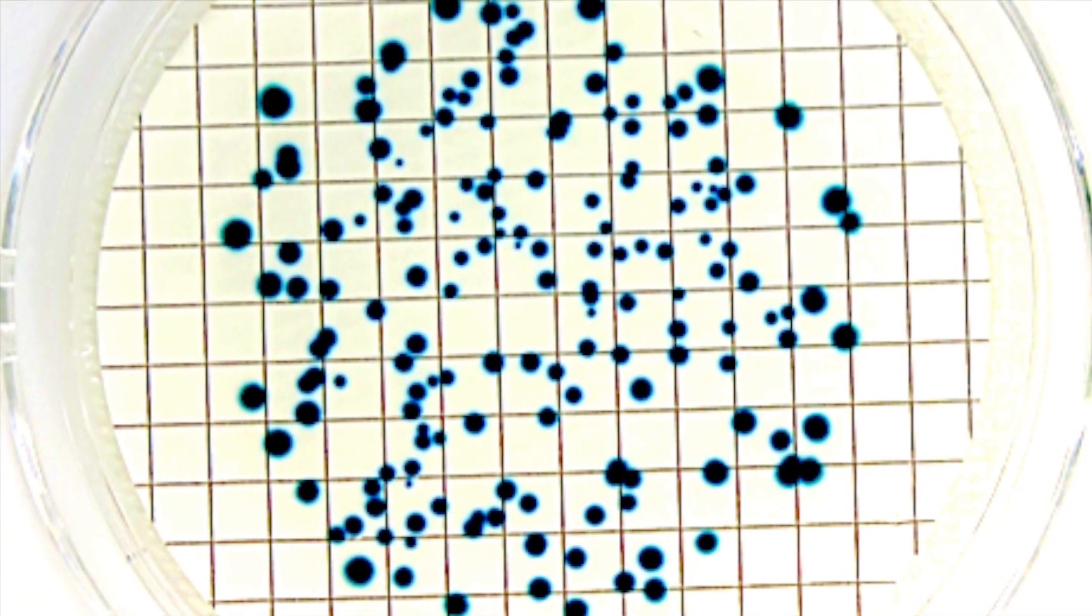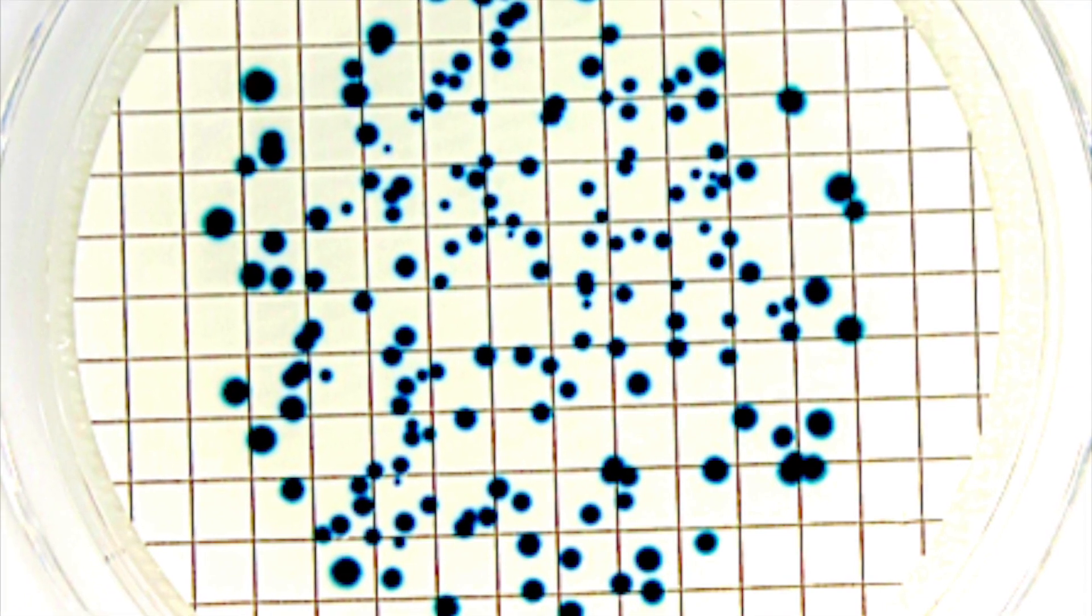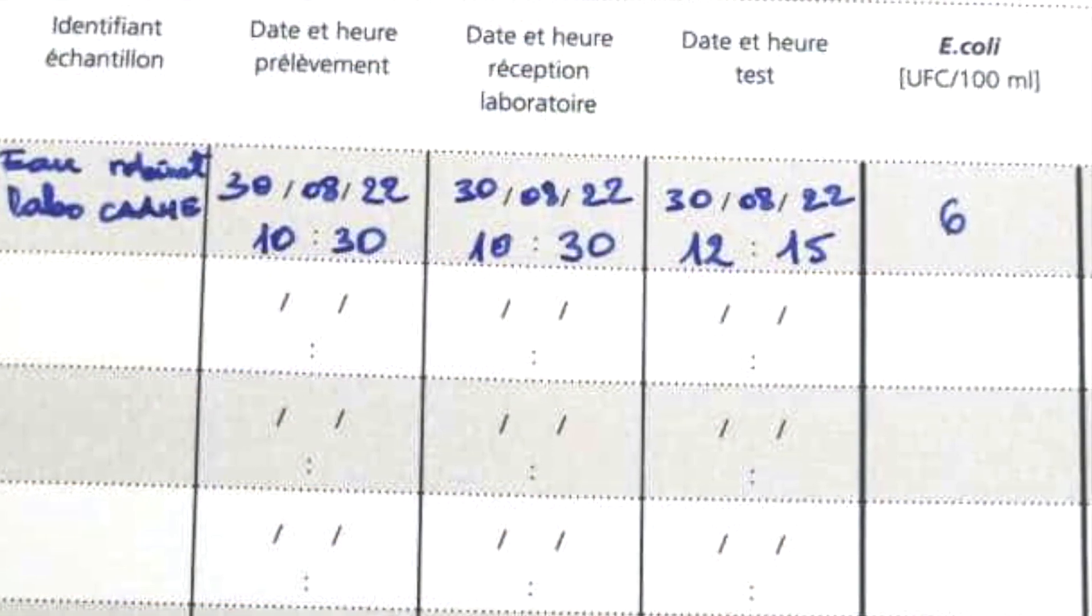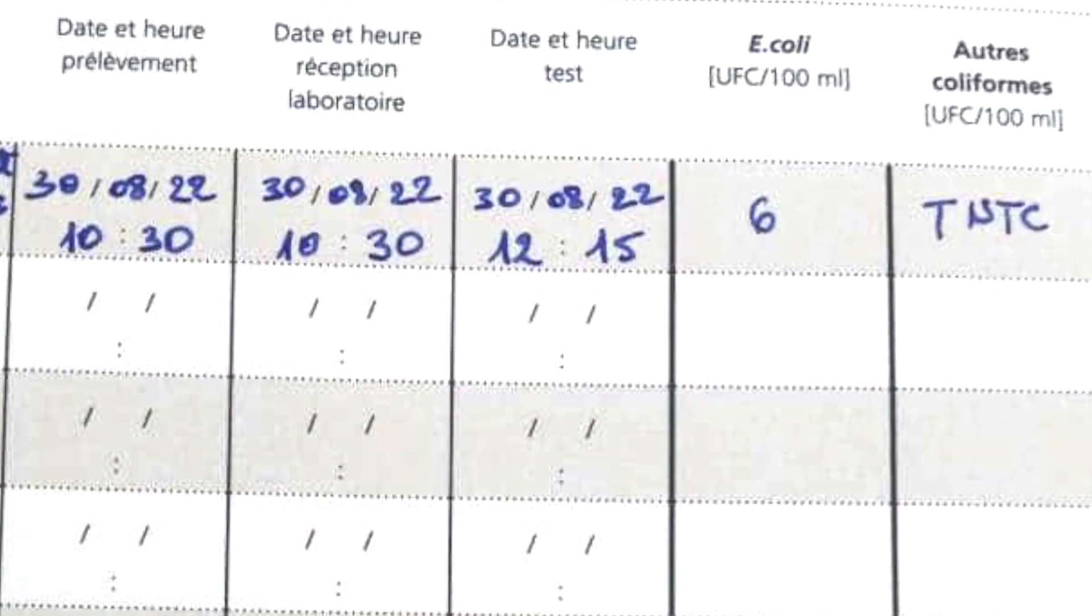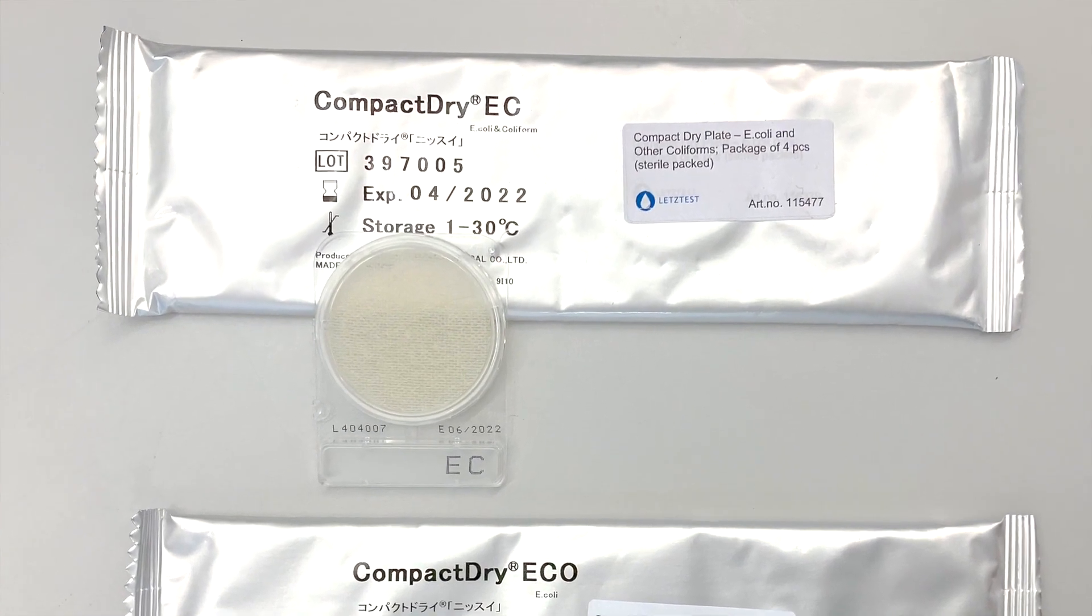If more than 200 colonies are present, the result is noted as too numerous to count. Record the result using the waterproof pen and the re-writable practical manual.